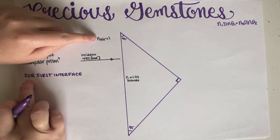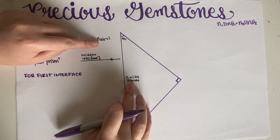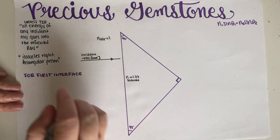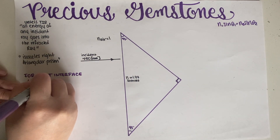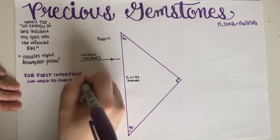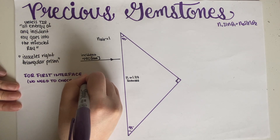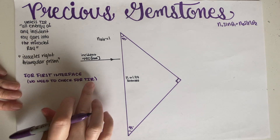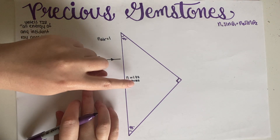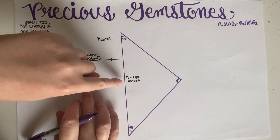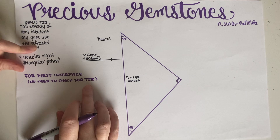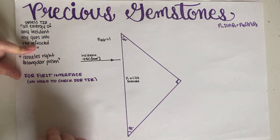For the first interface, we're going from air to sapphire — from a low index to a higher index. Whenever you're going from low to high, you don't need to check for total internal reflection, because that phenomenon only happens when going from high to low. So all of the ray is going to be refracted and enters the prism.